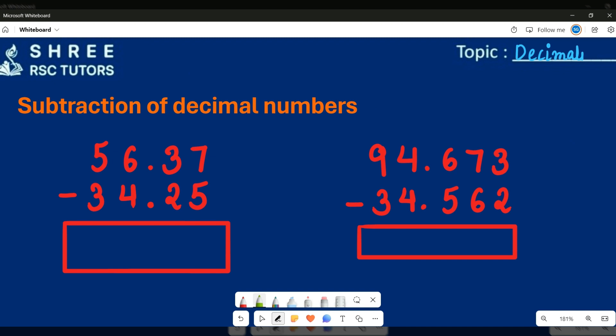So it can either start with the tenths column, hundredths column, or any digit or any column it can start with. But the rule is we can always start from the right-hand side. So let's do it together.